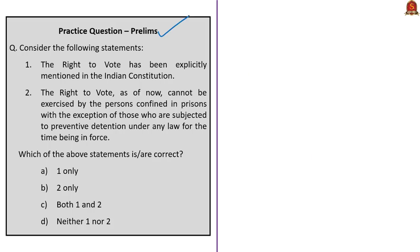This question is with reference to the right to vote. Two statements are given. The first statement: the right to vote has been explicitly mentioned in the Indian Constitution. This is incorrect because nowhere in the Indian Constitution has the right to vote been explicitly mentioned — not even among the Fundamental Rights.